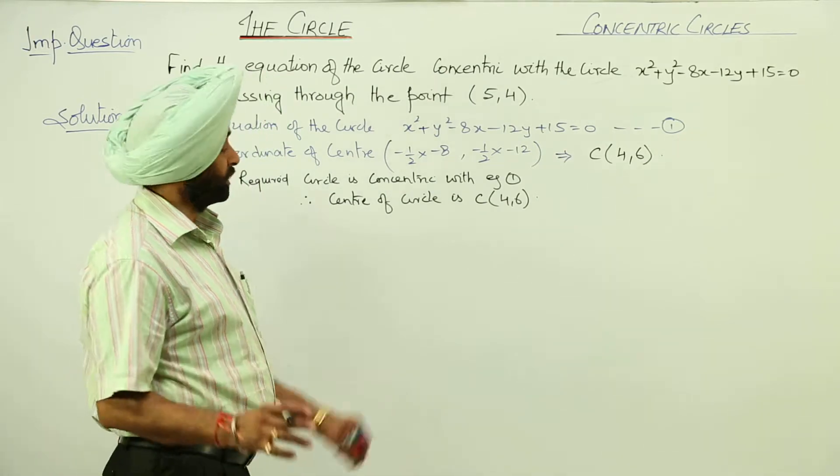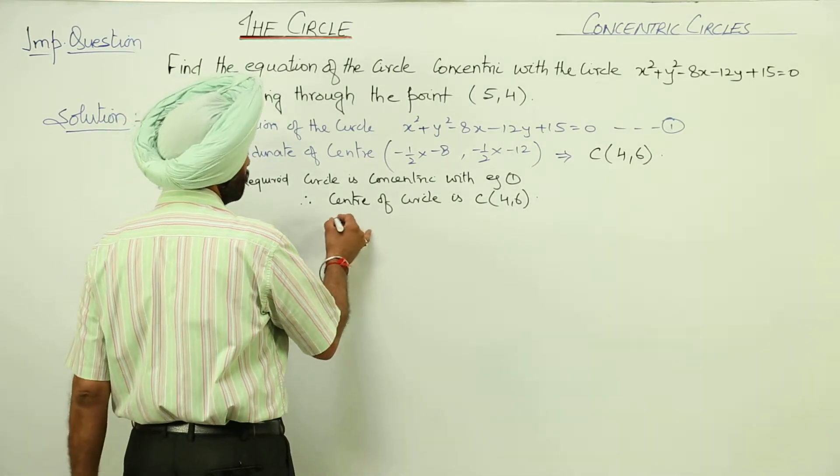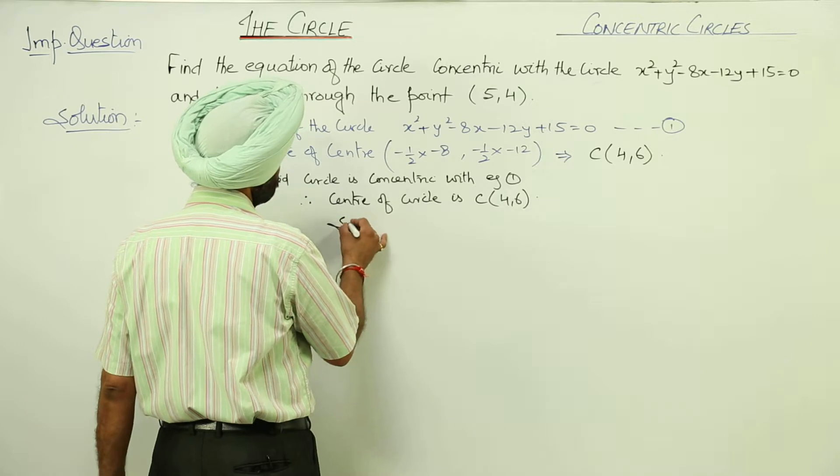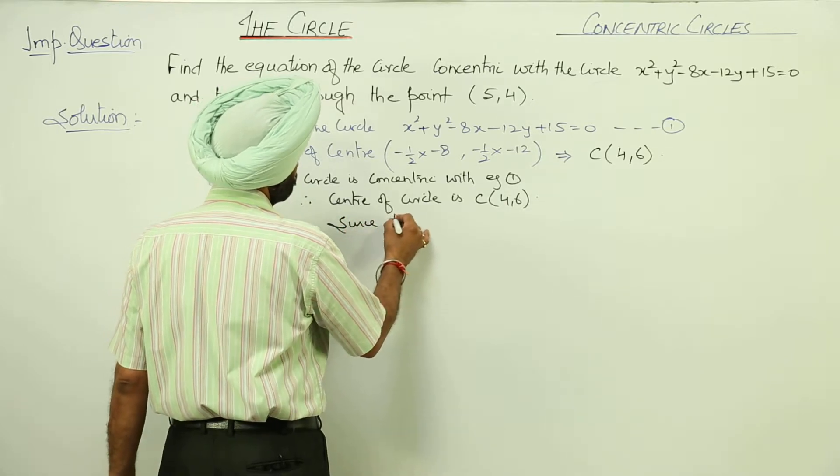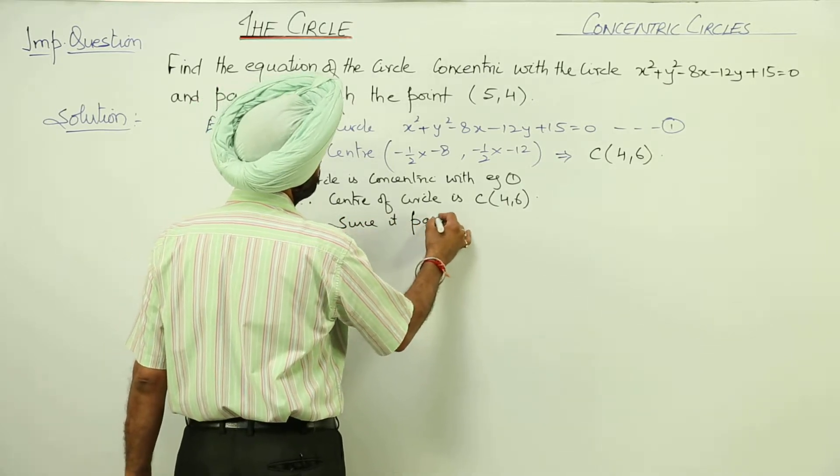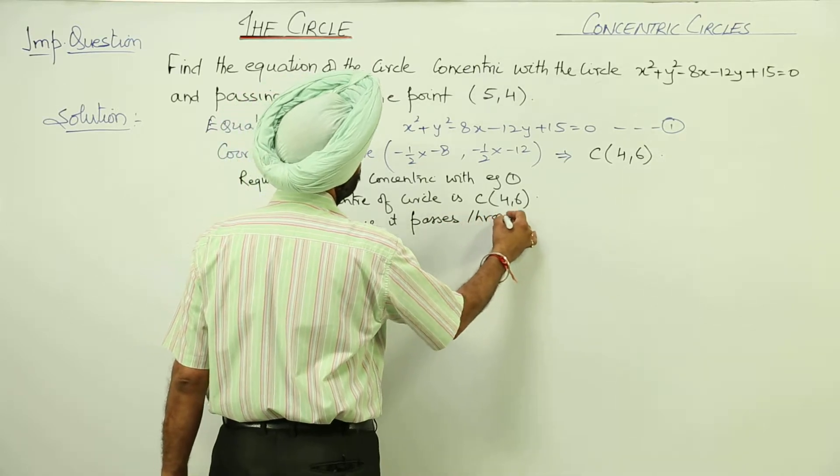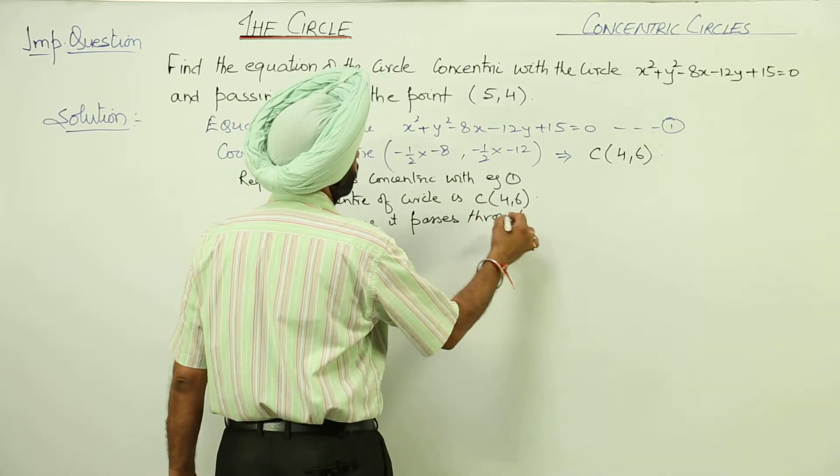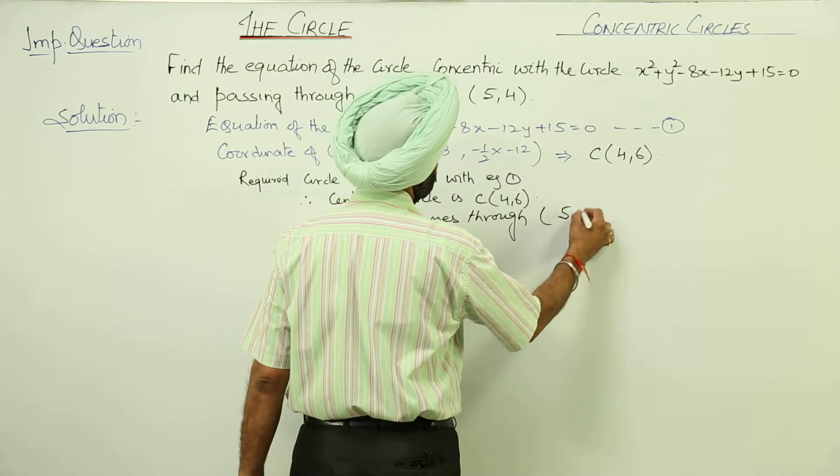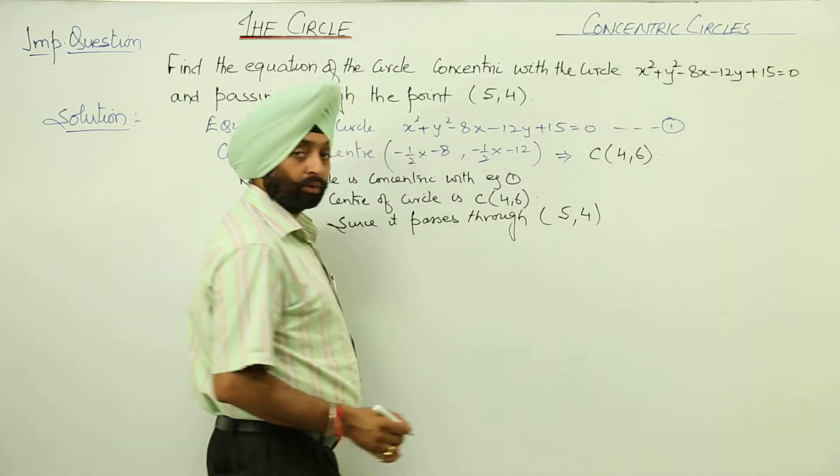Concentric circles have the same center. Since it passes through the given point (5, 4), therefore we can find the radius.